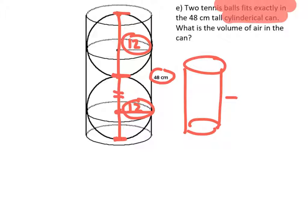And the main idea is finding the volume of this, the cylinder, and then subtracting the volume of those two balls.